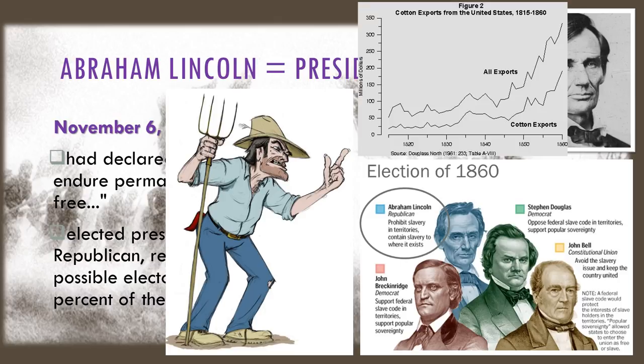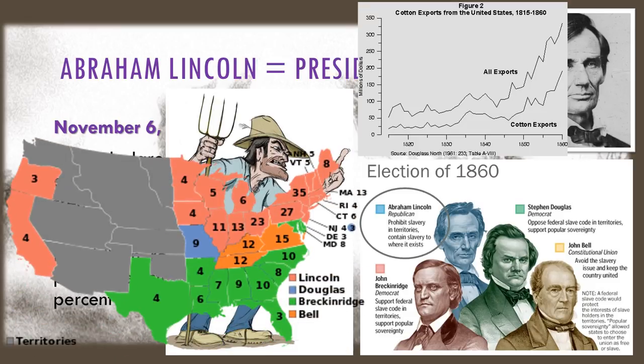Lincoln was the first Republican ever elected and he received 180 of the 303 possible electoral college votes and 40% of the popular vote. Even though he did not win by a lot, much of the reason he had won was because much of the South did not even have him on the ballot and the votes were spread out over four different candidates running.